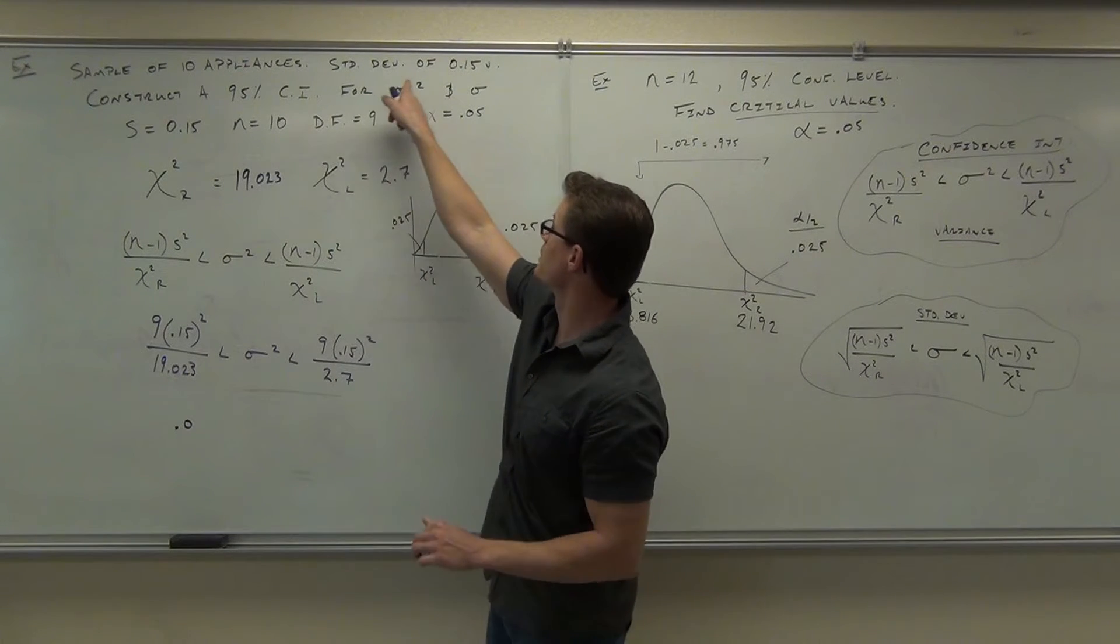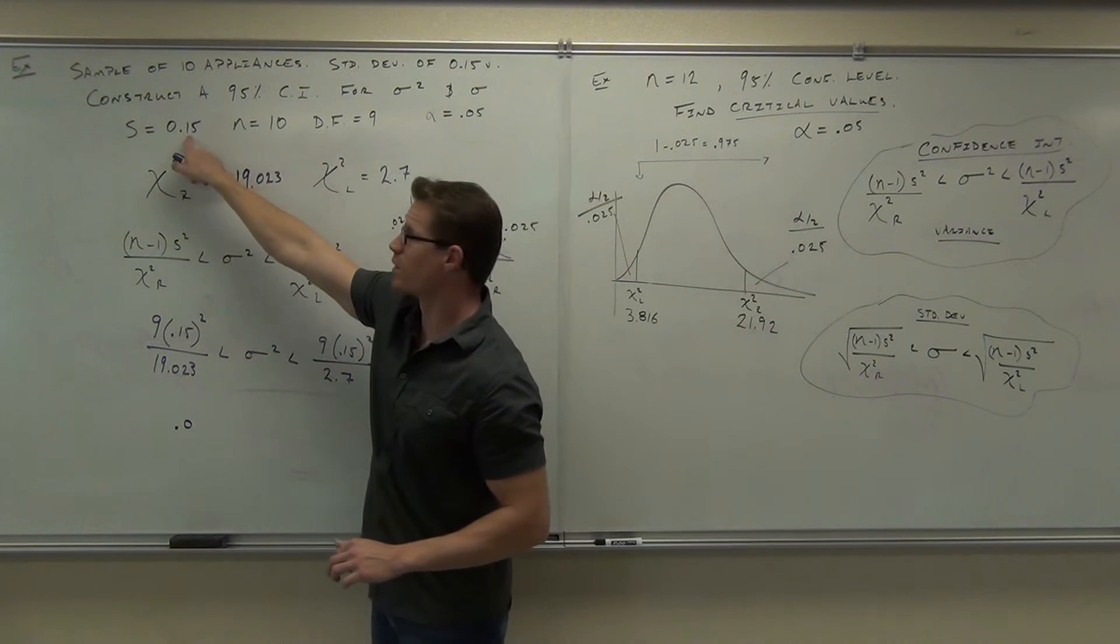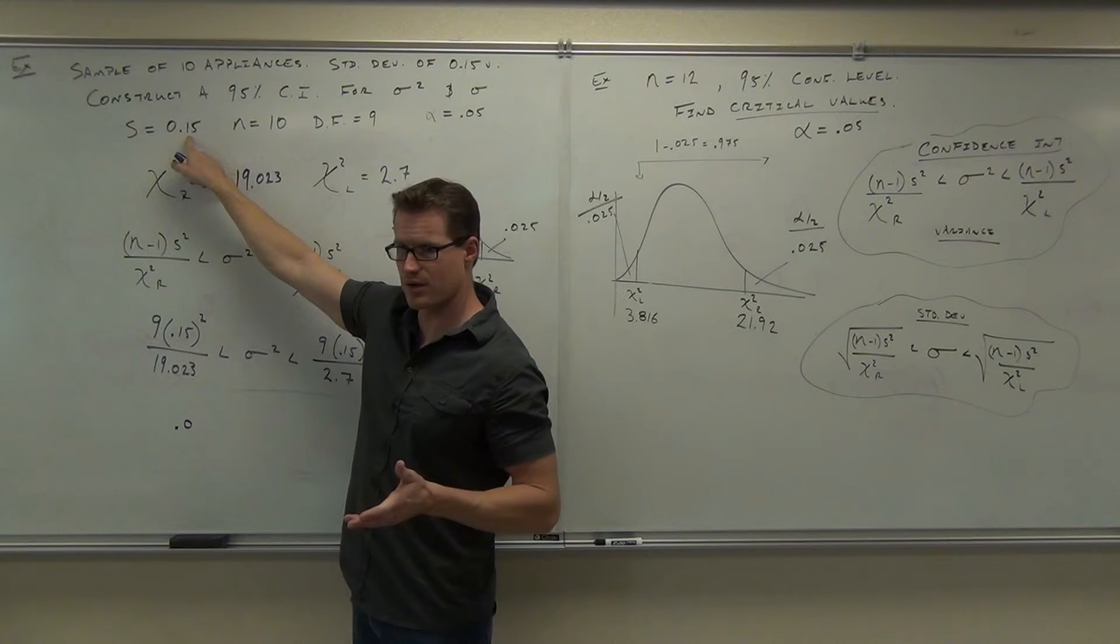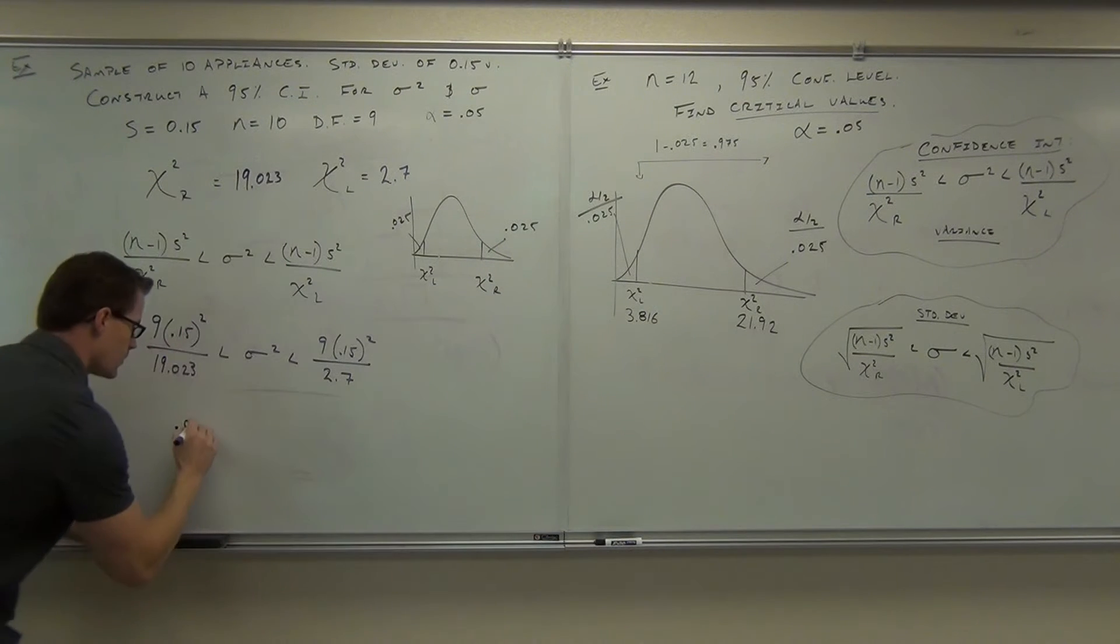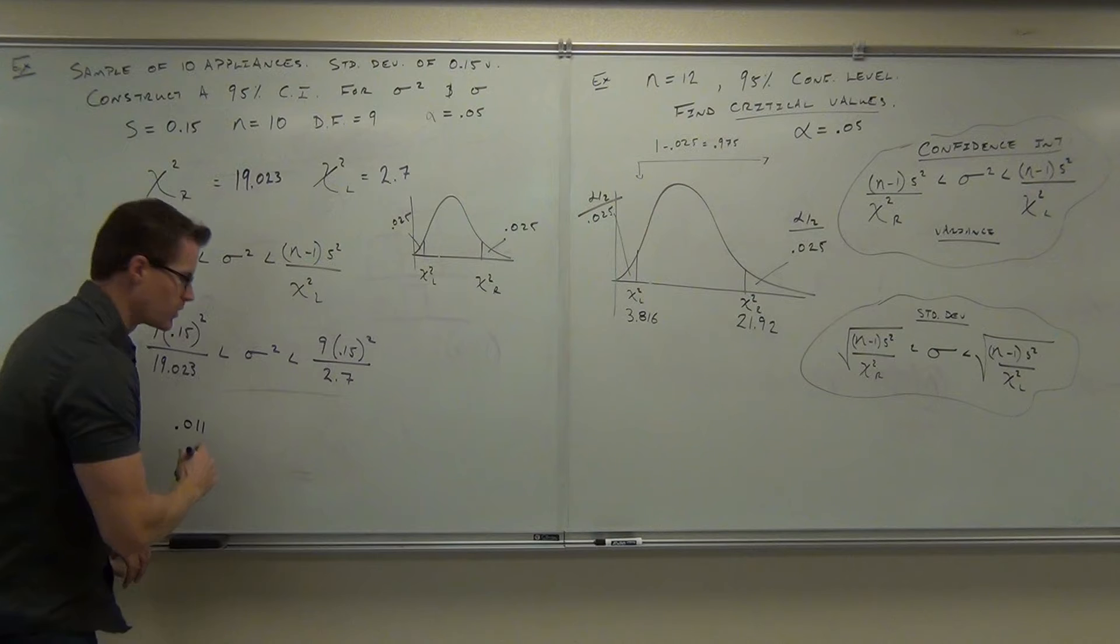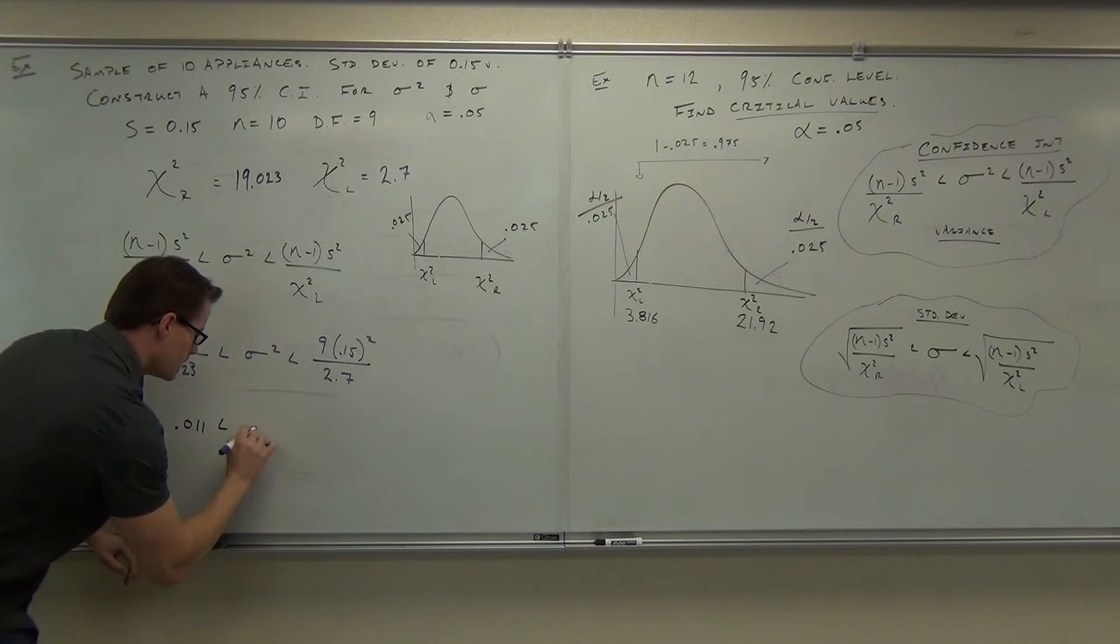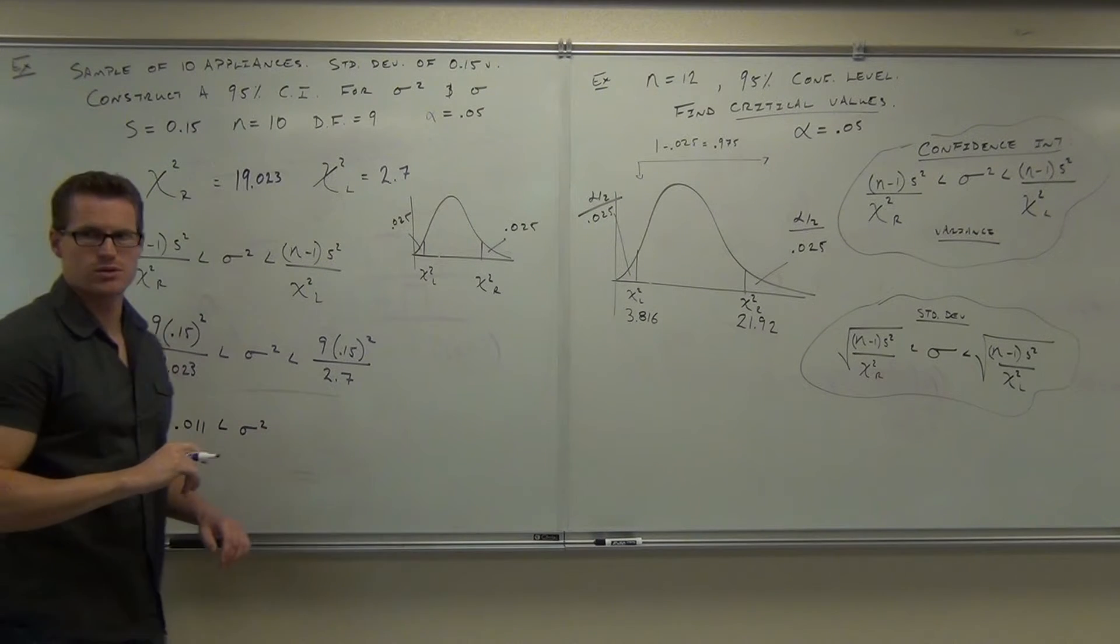Our voltage was given a standard deviation of 0.15. You can use that rounding rule there if you'd like. 0.011, go to one more decimal place. 0.0106, right?